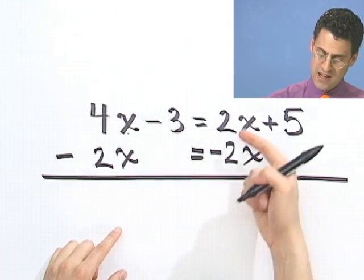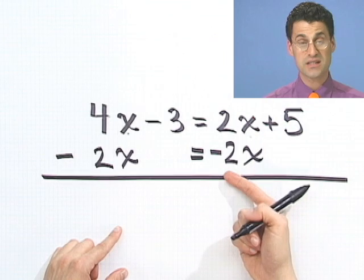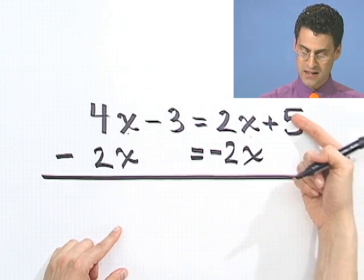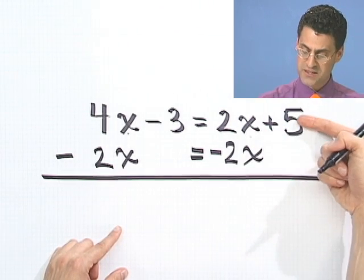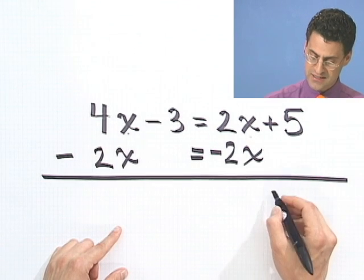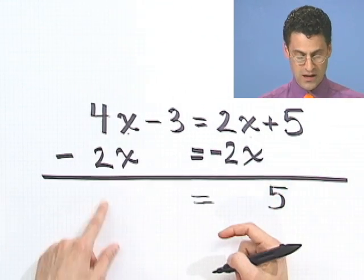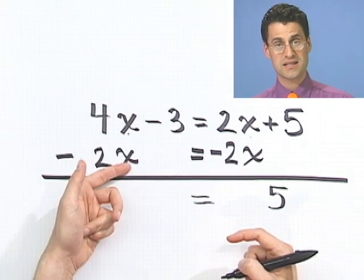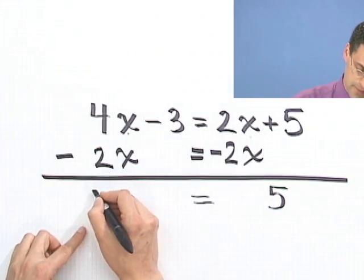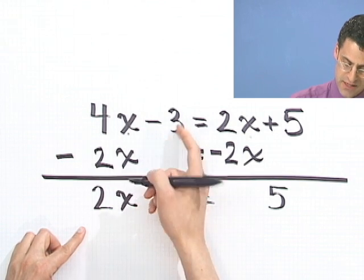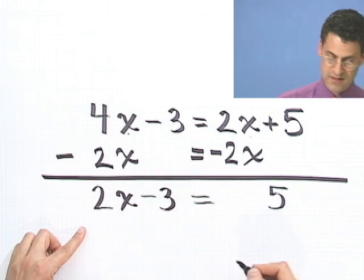But now notice that on this side I have a 2x minus 2x. That actually is 0. And on this side, still on this side, I have this 0, but this 5 remains. So when I combine, I just have a 5 on this side. That's 0. On this side, what do I have? Well, I have a 4x and I take away 2x's, that would leave me with 2x's. And this minus 3 would still be there because I haven't done anything to the 3's.